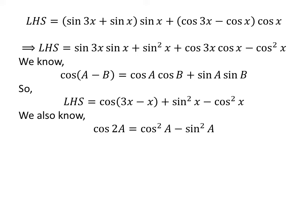We also know cosine of 2 times a is equal to square of cosine of a minus square of sine of a. The proof of this trigonometry identity is given in the video appearing in the upper right corner, and the link is also given in the description section.